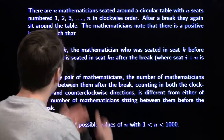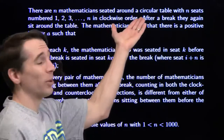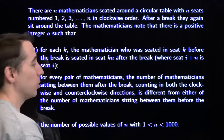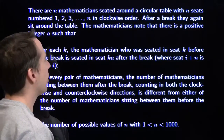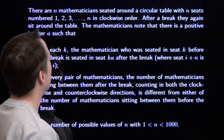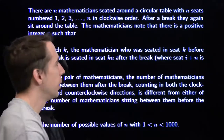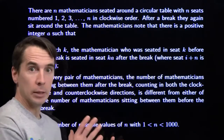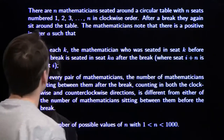We've got N mathematicians seated around a circular table, and this is what they came up with. This isn't a math problem, it's an English problem. The first step is to read through all these words and make sure we understand what they mean, because then we're going to try to turn them into math as fast as we can.